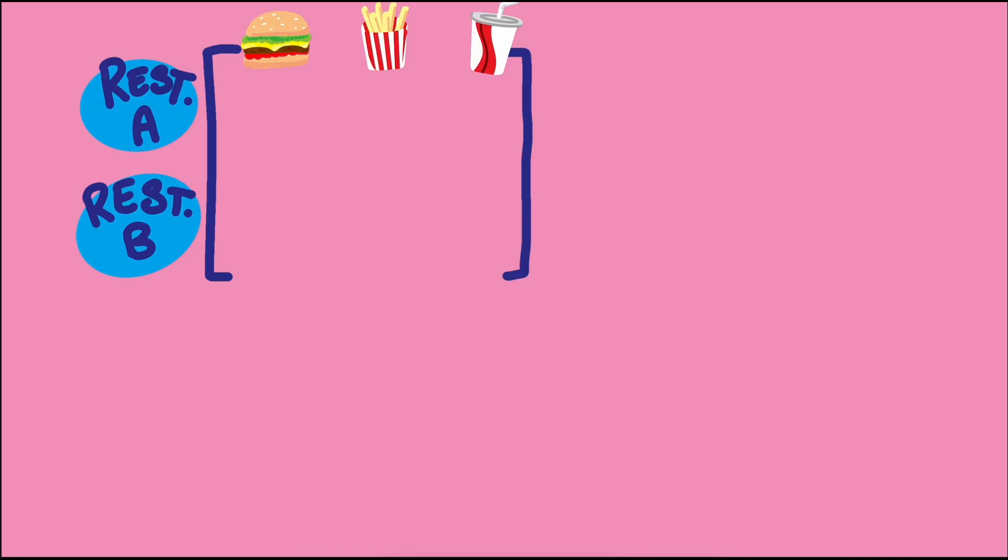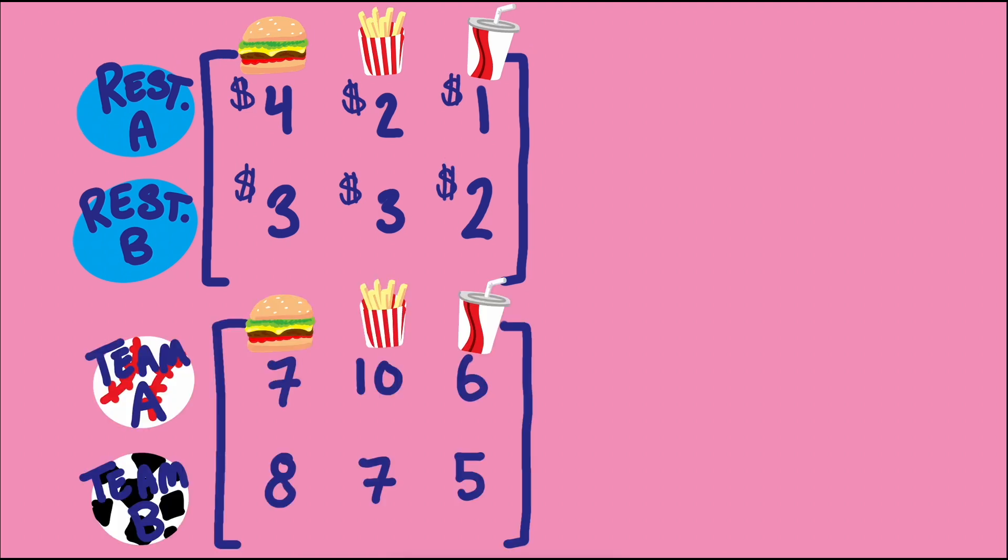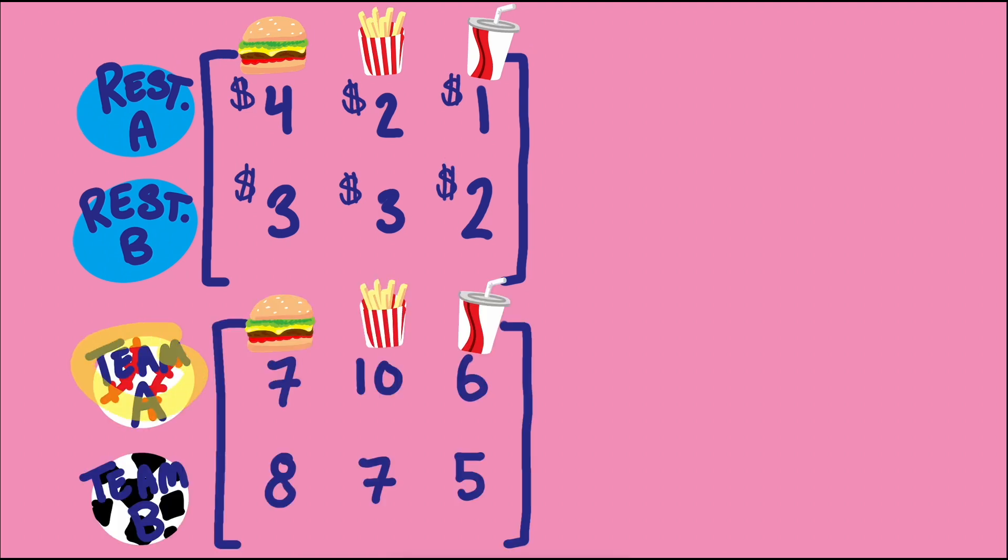Matrices help organize the prices and the amounts. Suppose we have two different restaurants that price their food differently, like in the matrix here. There are also two teams that will buy different amounts of food. We want to know how much it will cost team A to eat at restaurant A, team A at restaurant B, team B at restaurant A, and team B at restaurant B.